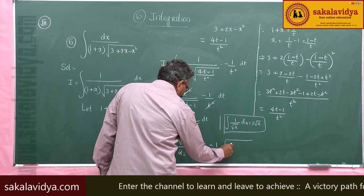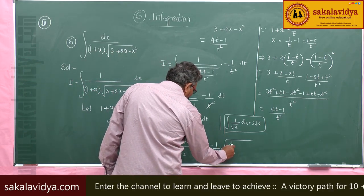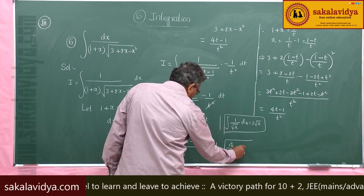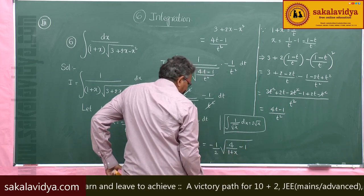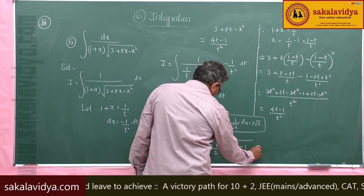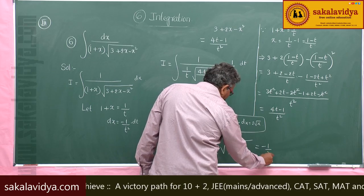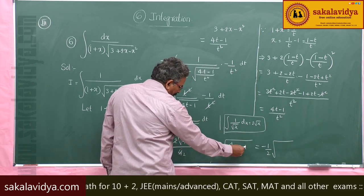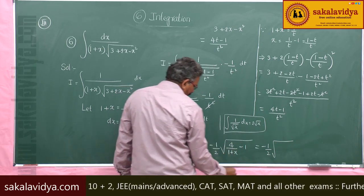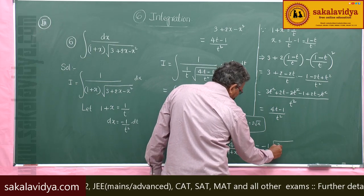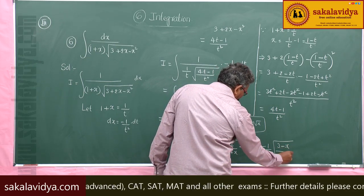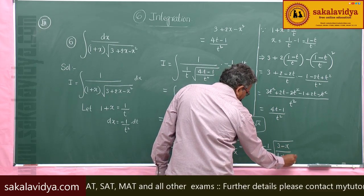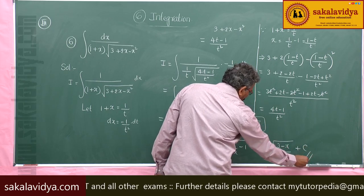So 4t minus 1 becomes 4 by (1 plus x) minus 1, which equals (4 minus 1 minus x) by (1 plus x), that is (3 minus x) by (1 plus x). Therefore the final answer is minus the square root of (3 minus x) by (1 plus x), plus the constant of integration.